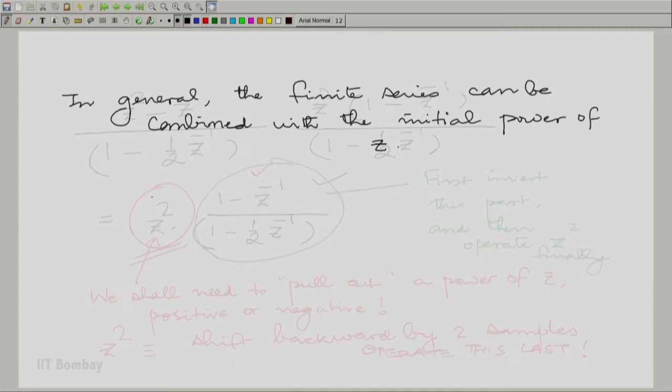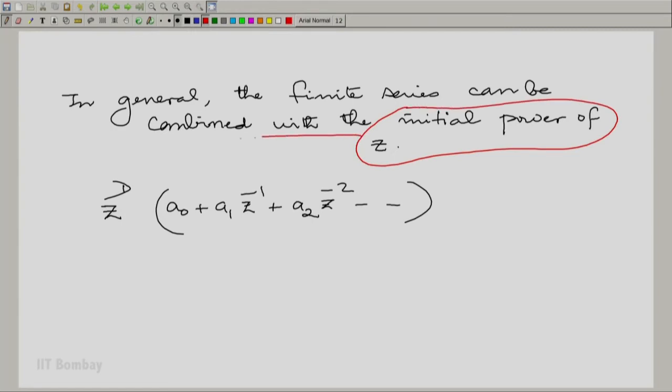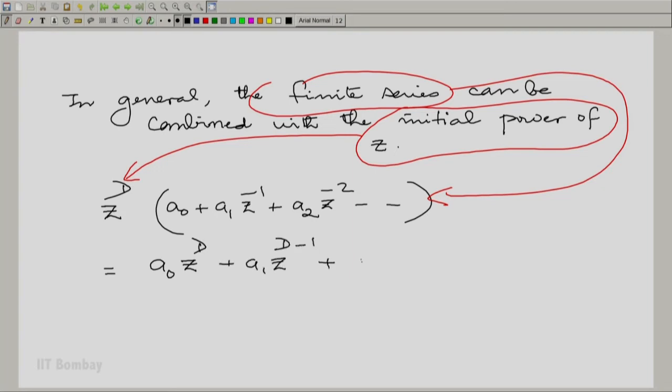You can combine that finite series with this factor, this power of Z. So, in general, suppose for example you have a finite series that looks like this—say A0 plus A1 Z inverse and so on. And then you had an initial factor of Z to the power D. So I am saying essentially that this initial power of Z is this and the finite series is this. Then you can combine them. So you can write A0 Z to the power D plus A1 Z to the power D minus 1 plus and so on.